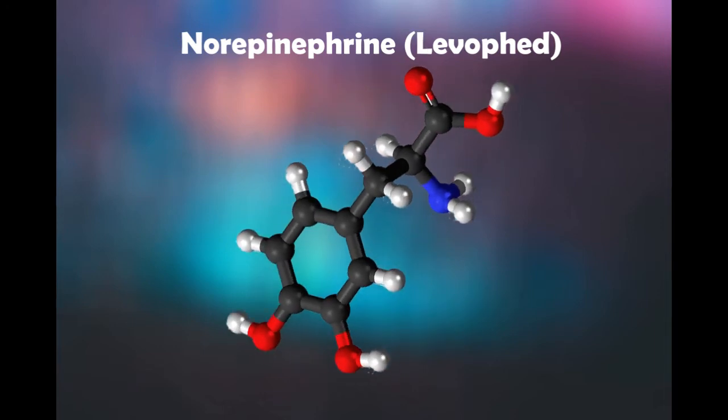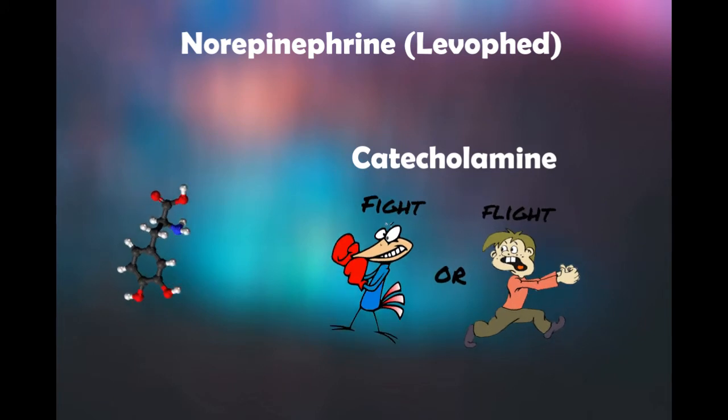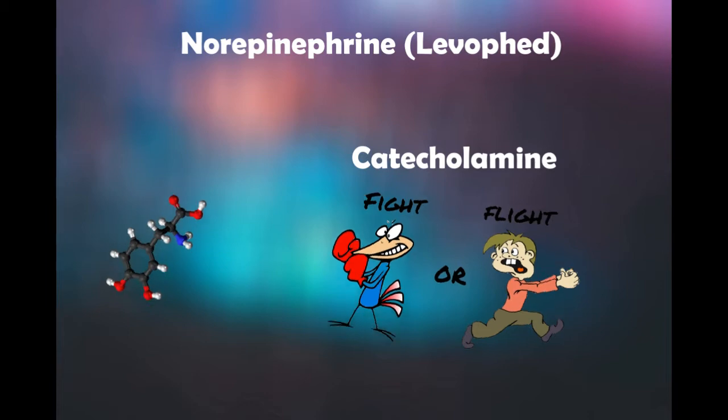Norepinephrine is the kind of neurotransmitter called a catecholamine, which facilitates the shock or the fight or flight response. That puts your sympathetic nervous system into overdrive.